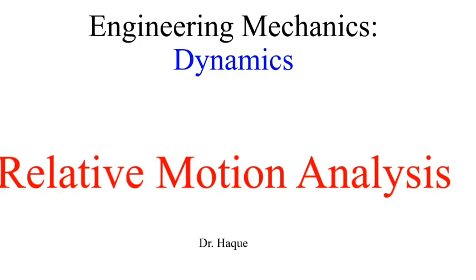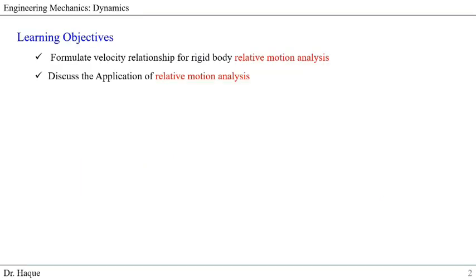So how do we do relative motion analysis? To be able to do that we need to understand the concept behind it. Let's start with our learning objective. The goals are formulate velocity relationship for rigid body relative motion analysis and discuss the application of relative motion analysis.